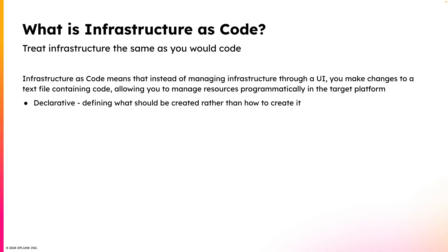To solidify what that means, imagine if you wanted to create three EC2 instances in AWS and you did that using a Python script that interfaces with the AWS API. You would create a for loop that iterates three times and each time it calls an API endpoint that creates an EC2 instance. So if you were to define those EC2 instances declaratively, you would not be required to write out a for loop. You can just say, I want three EC2 instances, and then the infrastructure as code program abstracts away the need to implement a for loop yourself.